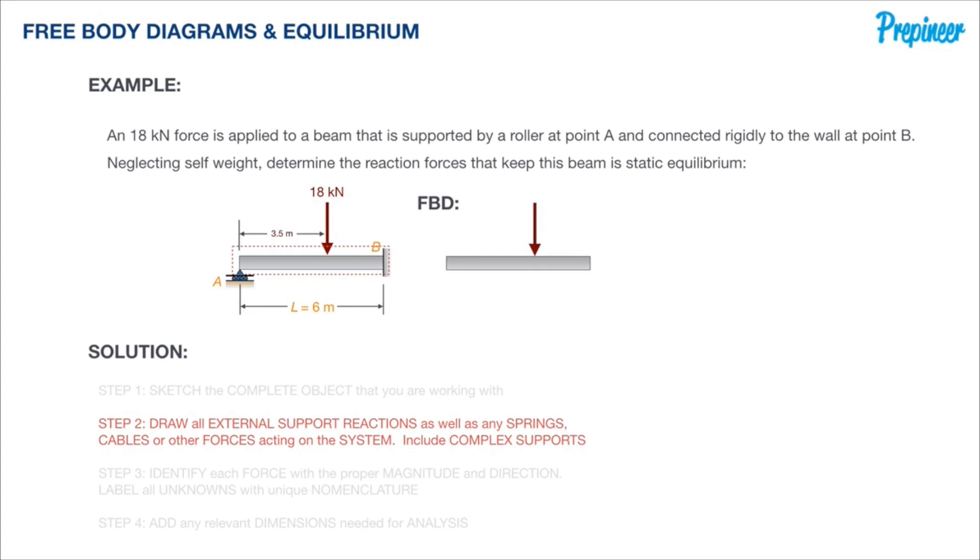Identifying all these forces, we have that downward 18 kilonewton force on the beam, but we also have a series of reactions or supports at both points A and B. These reactions are what we would traditionally call support reactions.